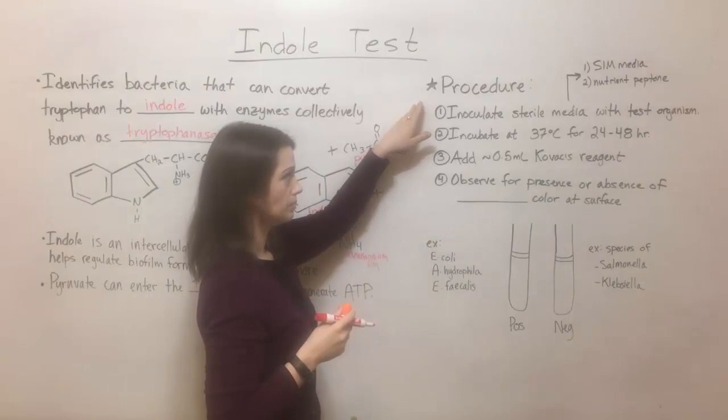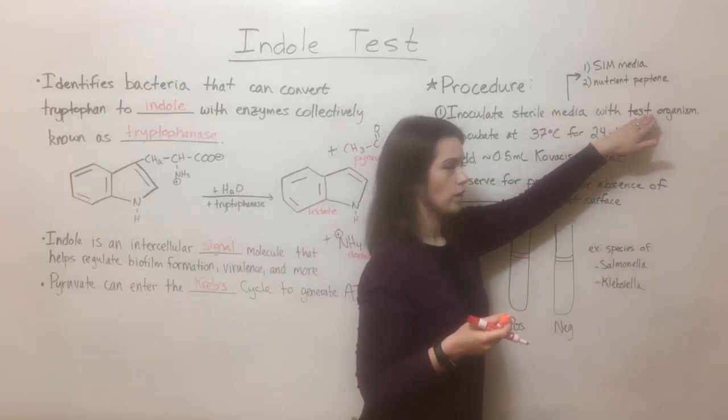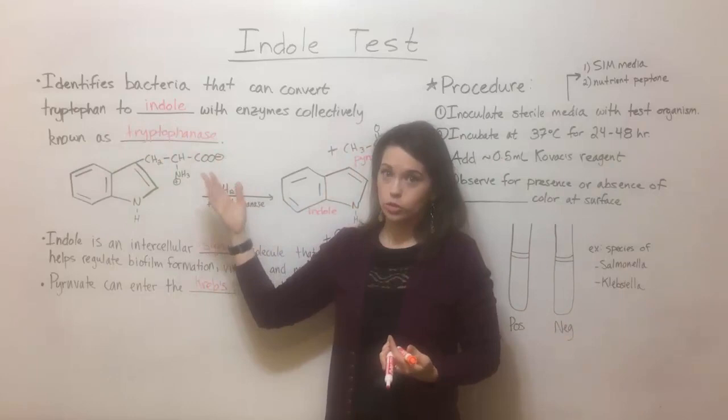Then you incubate at 37 degrees — that's human body temperature — for 24 to 48 hours. This is to give the test organism time to convert tryptophan to indole, if in fact it's able to do so, if it has those tryptophanase enzymes.